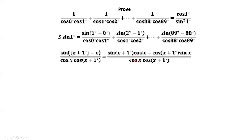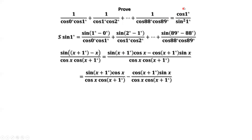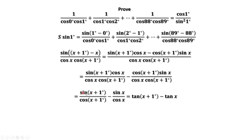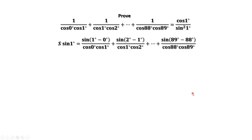We split the right-hand side into two terms and simplify. The cosine x terms cancel, giving sine(x+1°) over cosine(x+1°). Then cosine(x+1°) cancels out, leaving sine x over cosine x. Therefore we have sine(x+1°) over cosine(x+1°) minus sine x over cosine x, which equals tangent(x+1°) minus tangent x. This is our key identity.